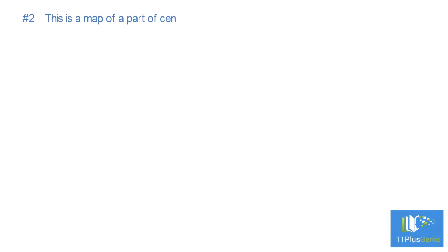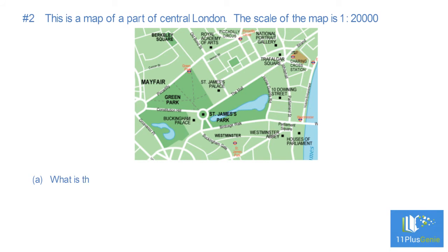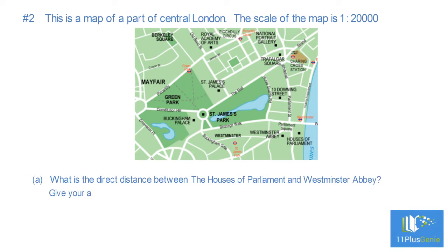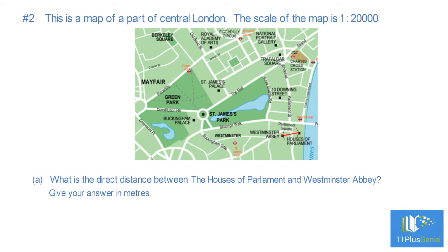Example 2: This is a map of part of central London. The scale of the map is one to twenty thousand. Part A: What is the direct distance between the Houses of Parliament and Westminster Abbey? Give your answer in meters. A scale of one to twenty thousand means one centimeter on the map equals twenty thousand centimeters on the ground.